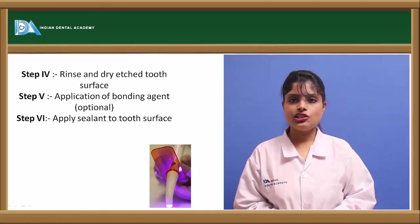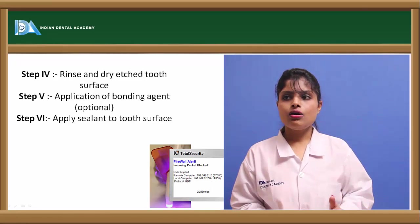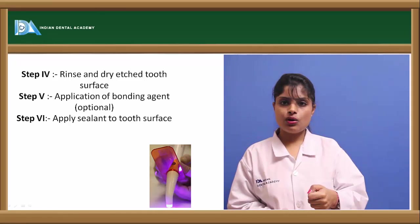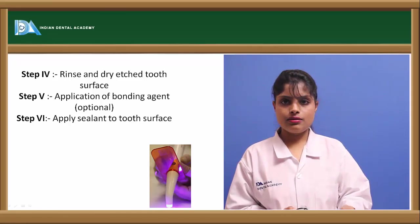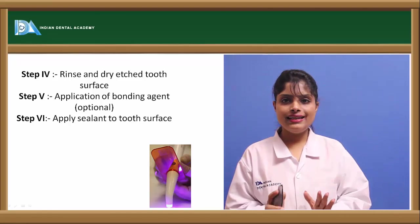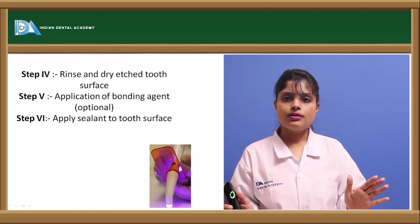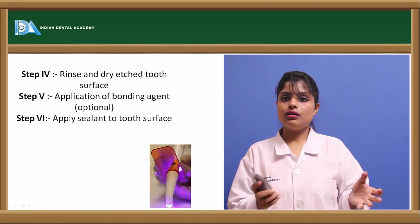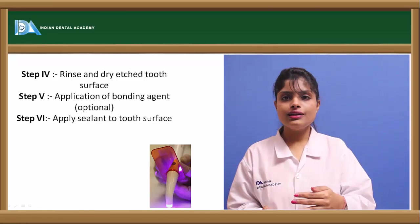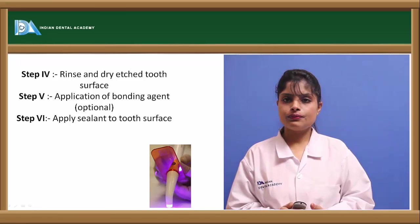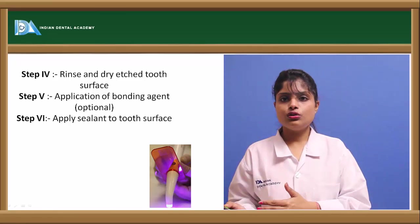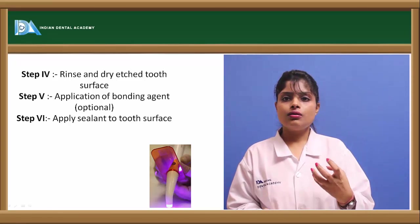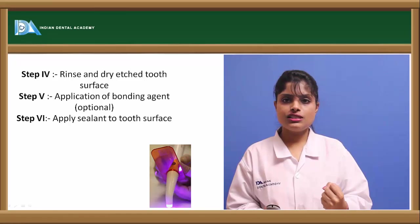The next step after etching is rinsing or washing away of the acid from the tooth. This can be done by a jet of water and air spray for 30 seconds, completely drying the tooth of any remaining acid. Even if the tooth is contaminated by saliva for just 10 seconds, bonding will not take place — so a further etching of 10 seconds can be followed. After rinsing, drying of the tooth should be done, and bonding agent can be applied to enhance bonding of the pit and fissure sealant to the tooth surface.